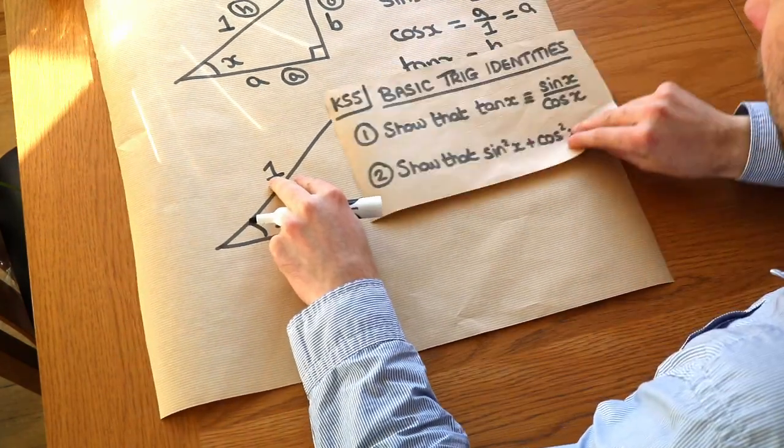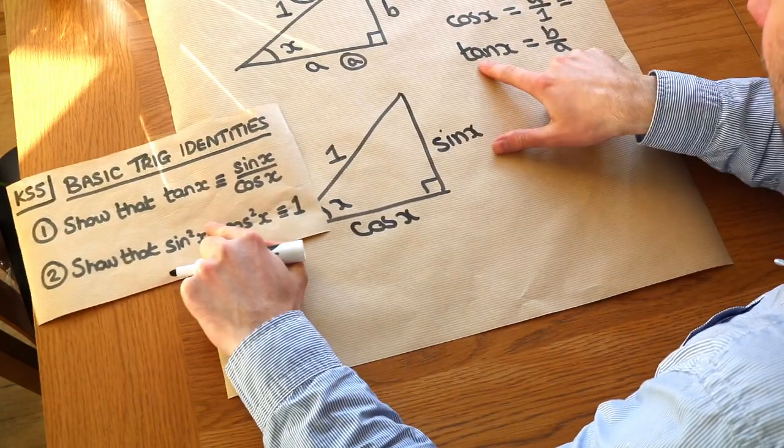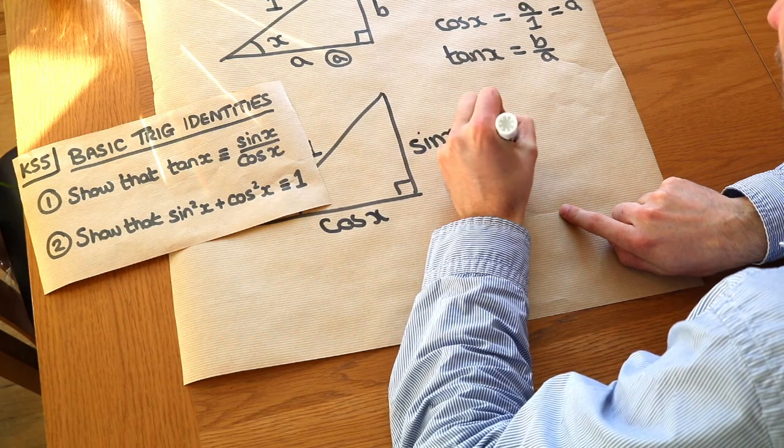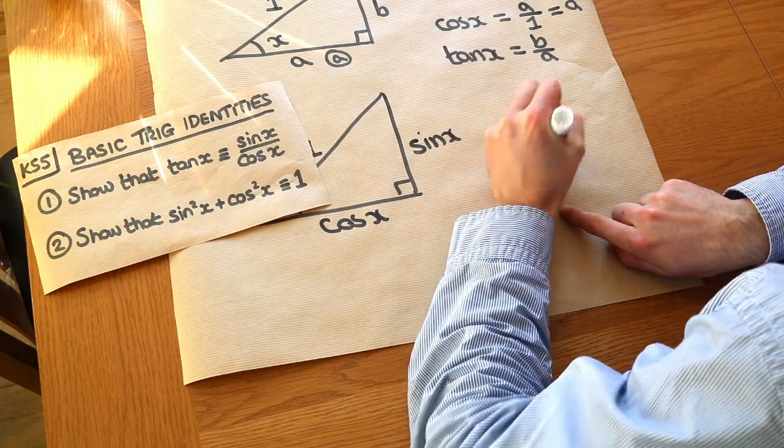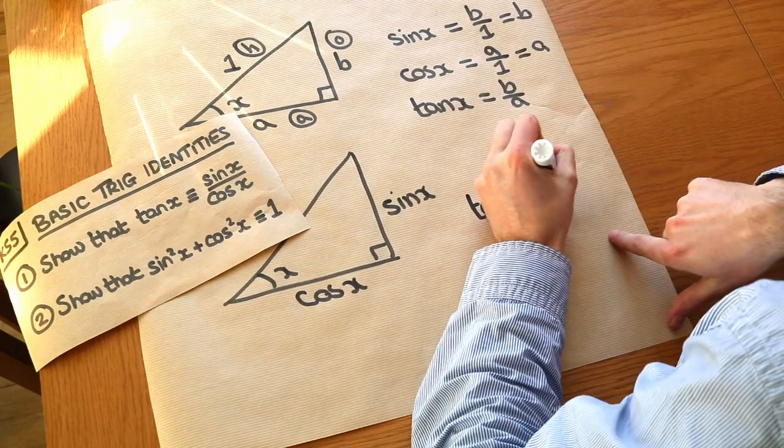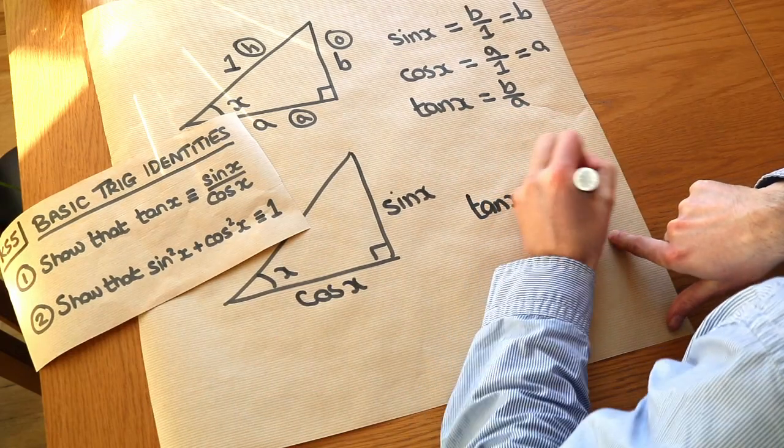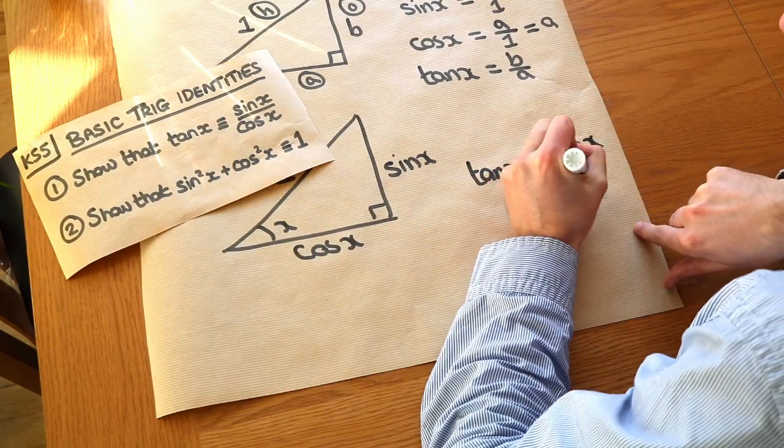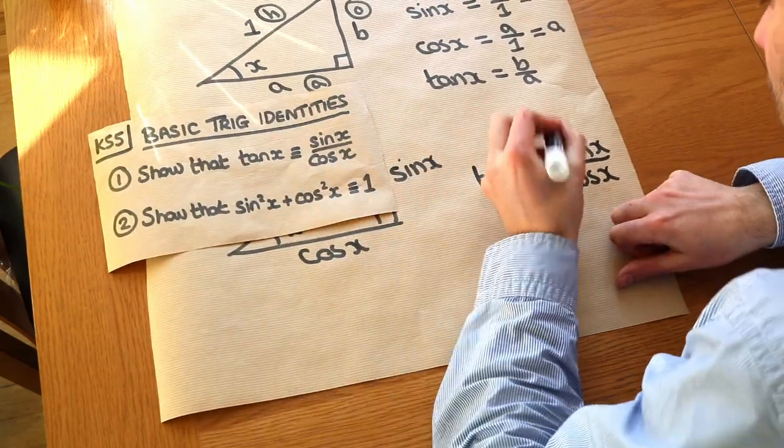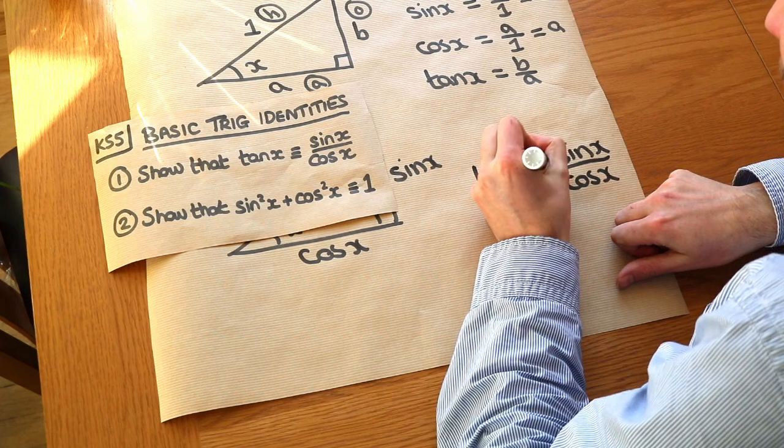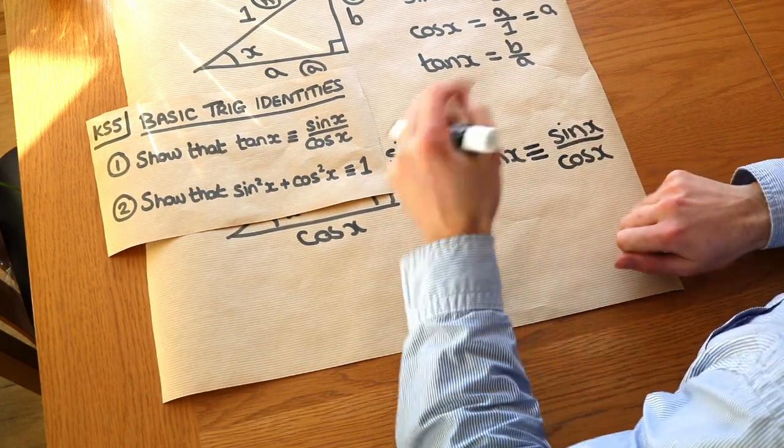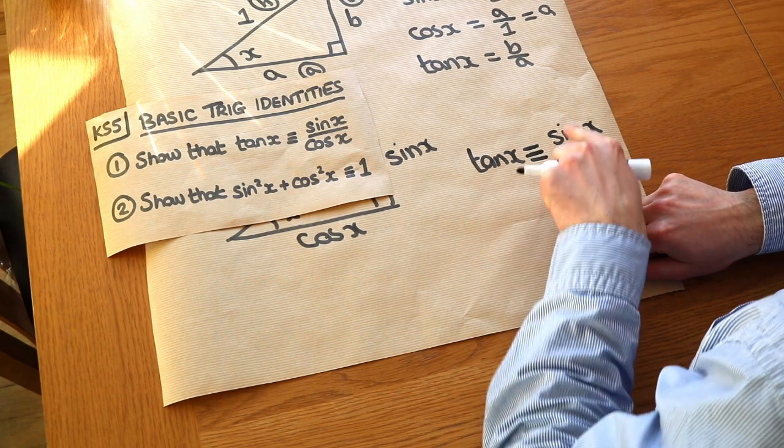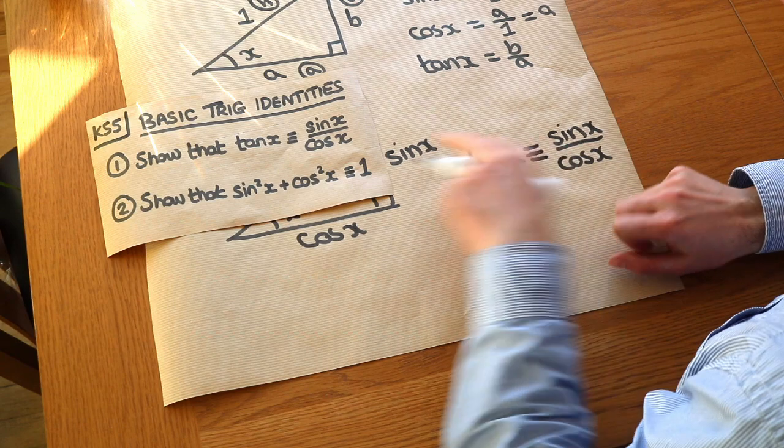And we can now prove these two identities here. Note that tan of x was b over a. So we can see that tan of x is equal to b, which is the sine of x, over the a, which is cos of x. So that gives us our first trigonometric identity. And really we should put a sort of triple equal symbol here. That's an identity, and that means this is true for every value of x. For example, tan of 30 will be equal to sine of 30 over cos of 30.